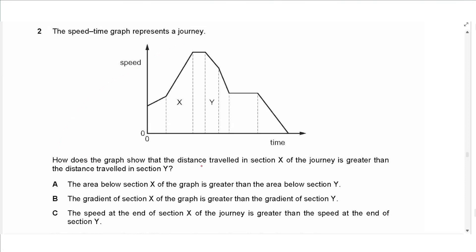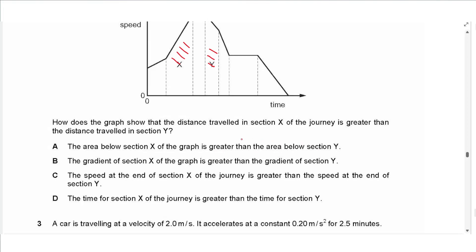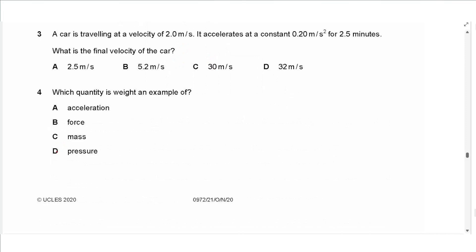Question 2 says: the speed-time graph represents a journey. How does the graph show that the distance traveled in section X is greater than the distance traveled in section Y? The distance from a speed-time graph is given by the area under the graph. The area under part X is greater than the area under part Y, so the answer is A.